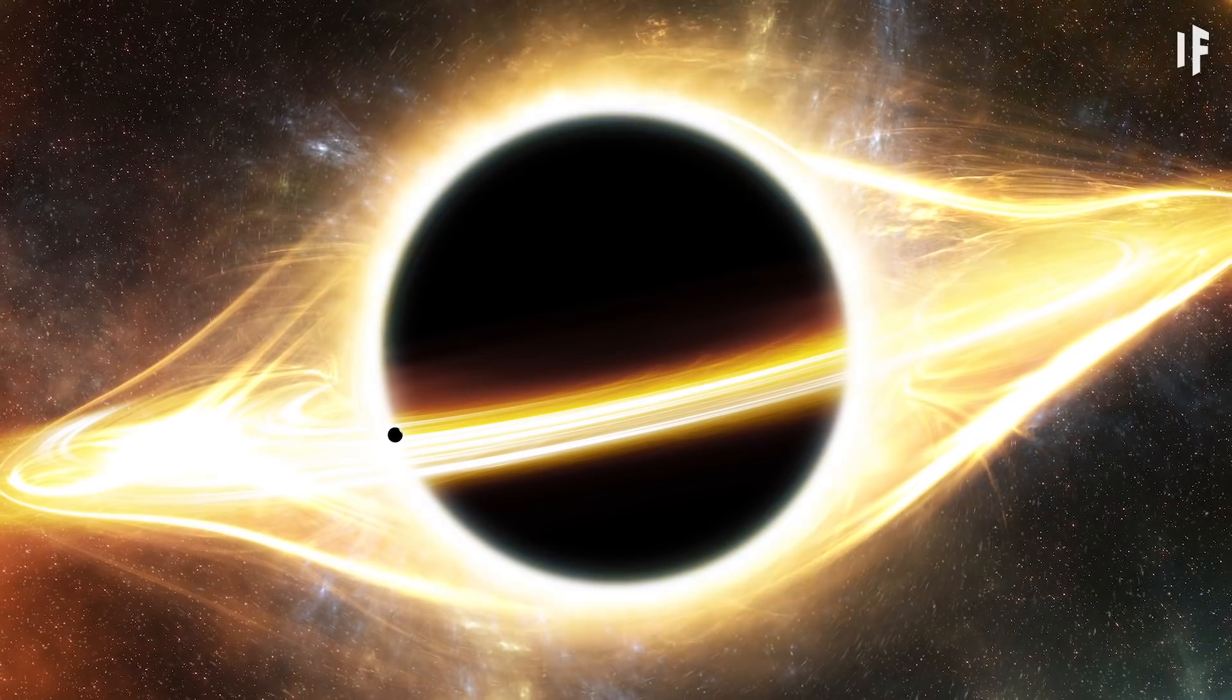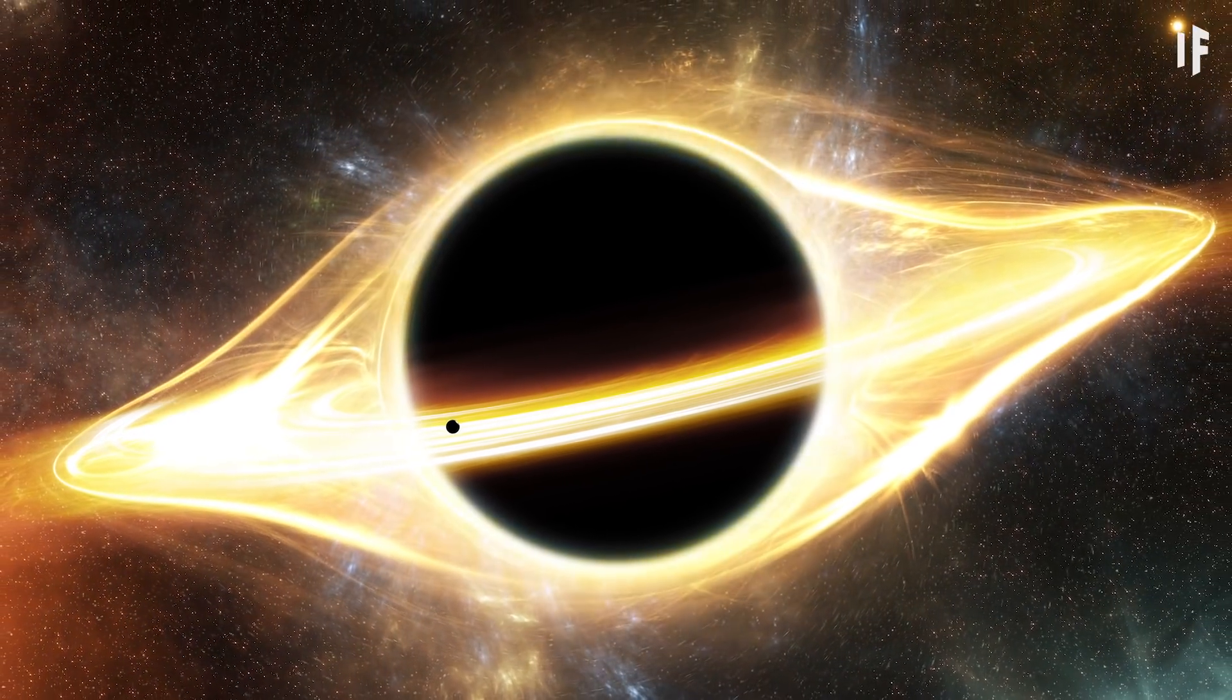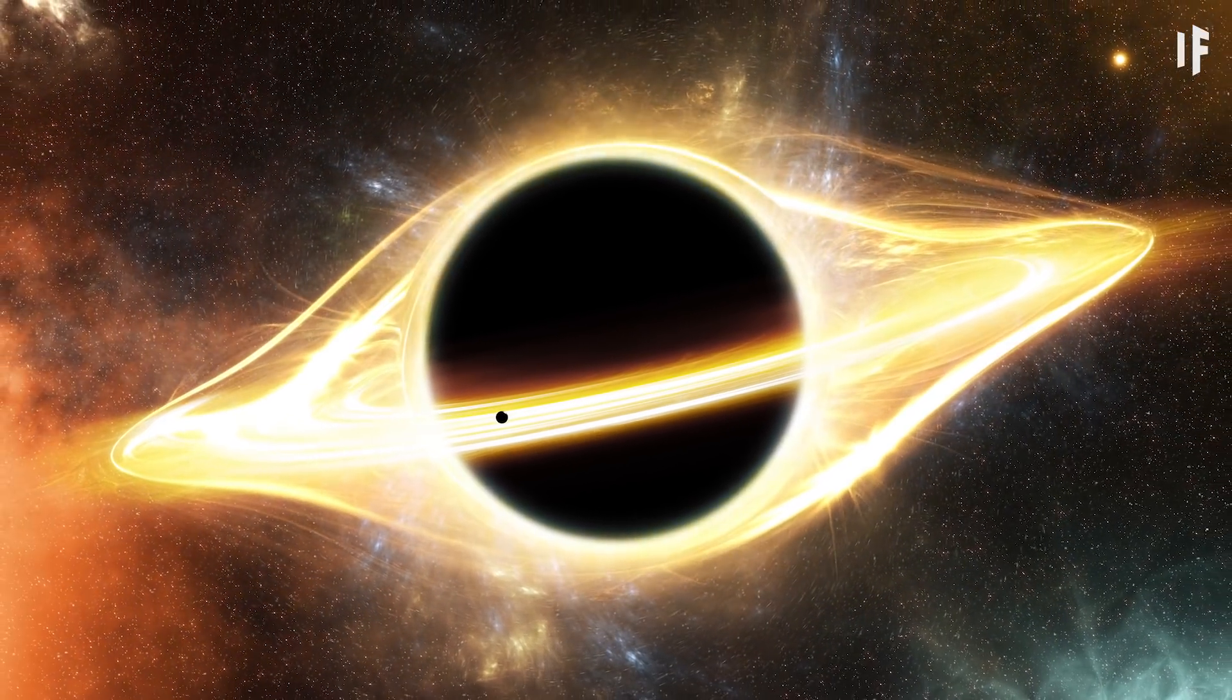The light appears to come from the gaseous rim around the black hole, but it's coming from behind it.